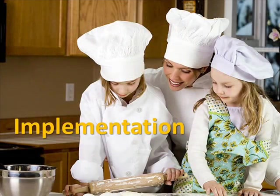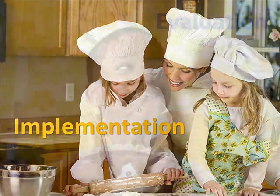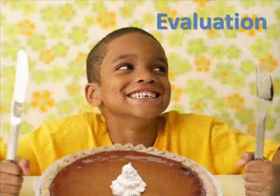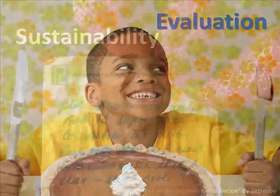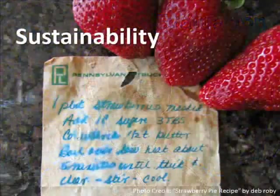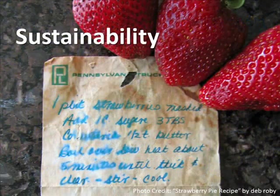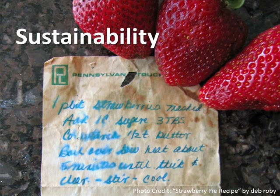The implementation process is like when we put all of the ingredients together and bake our pie. The evaluation process is like tasting our pie and deciding whether or not we like it. And then sustainability could take shape in writing down the recipe, adapting it based on how it tasted, putting it in a safe place, or sharing it with family members.